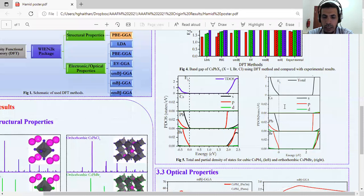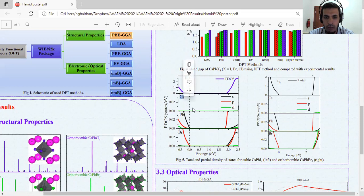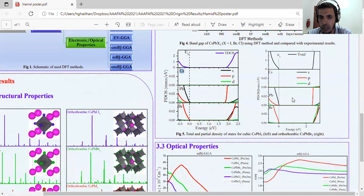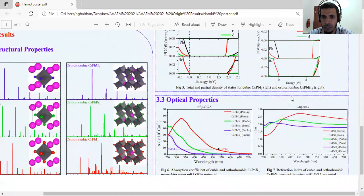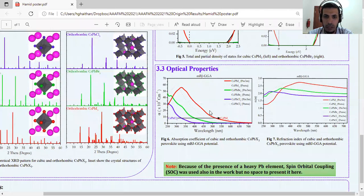To understand bandgap a bit better, we want to see which atom contributes to the energy bandgap. The left graph represents total and partial density of states for cesium lead iodide in cubic phase. As we can see, cesium does not contribute to energy bandgap, but lead and bromide contribute almost. Also for orthorhombic cesium bromide, cesium does not contribute to energy bandgap. For optical properties,